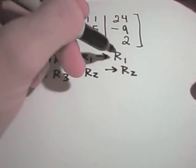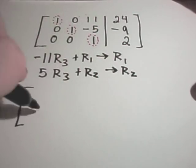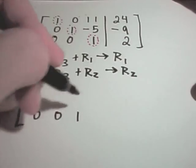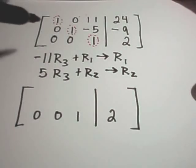Okay, so again, the only rows that are changing are row 1 and row 2, so I'm going to leave my 0, 0, 1, 2 row alone, just so I don't accidentally do something to it.